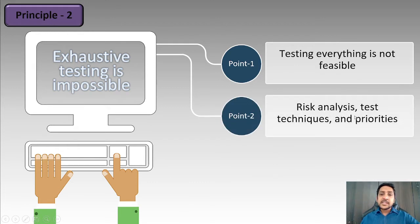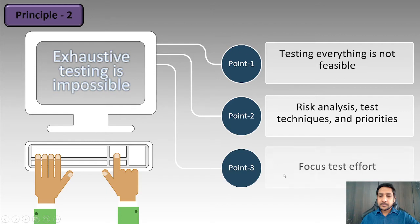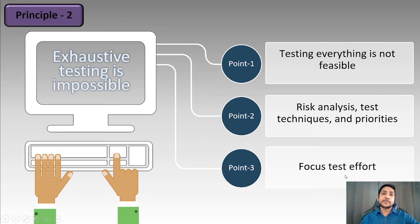When we perform testing we have to consider risk analysis, test techniques, and priorities. Based on risk, technique, and priorities we perform testing. We also have to focus on the test effort — just because we have software doesn't mean we must test each and everything in it. We have to see how much effort that will take.